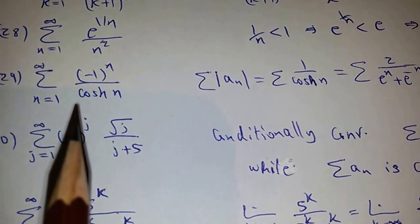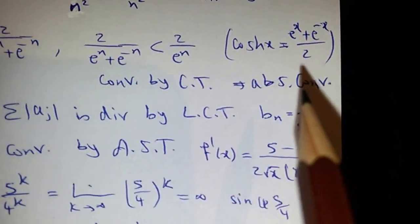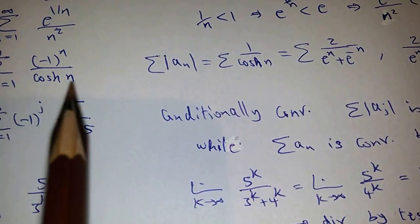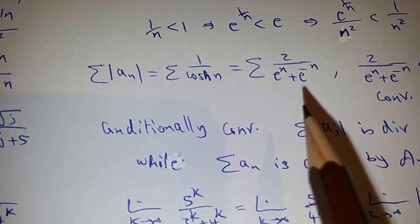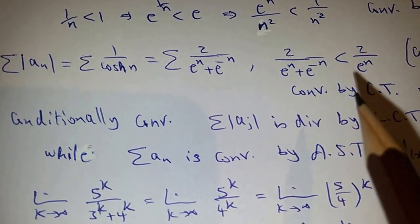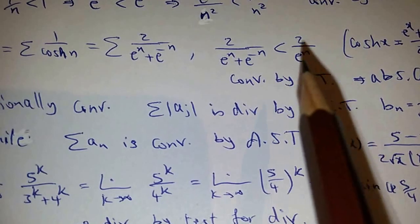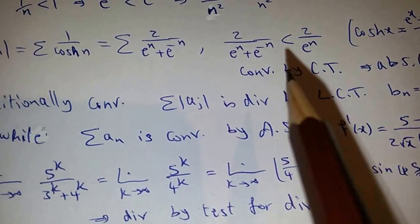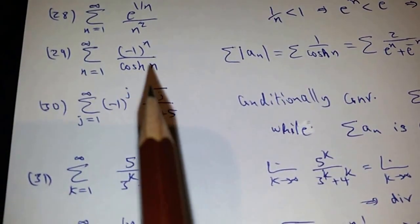You should know the definition of cosh. cosh(x) is e^x + e^(−x) over 2. So 1/cosh(x), if you consider the summation of the absolute value, equals 2/(e^n + e^(−n)). You can use the comparison test because e^n + e^(−n) is greater than e^n, so this is less than 2/e^n. This is a geometric series with ratio 2/e < 1, so it's convergent. So this series is absolutely convergent.